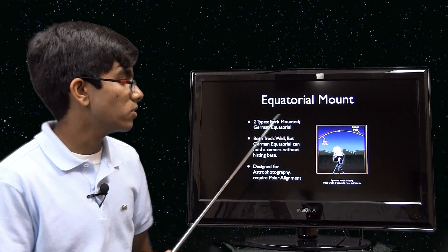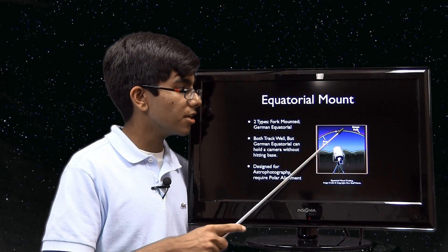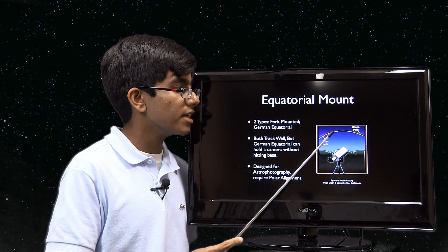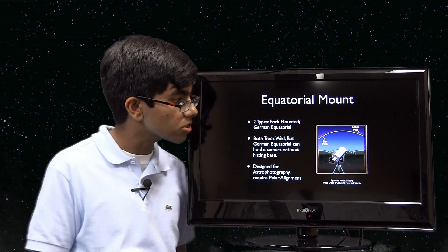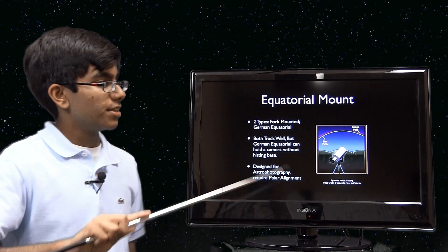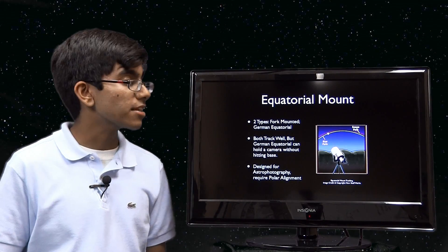So back to the equatorial mount. See how our star goes here? The scope, which is the red line, is following just very closely to the star. This features constantly being on the star with this tracking mechanism.